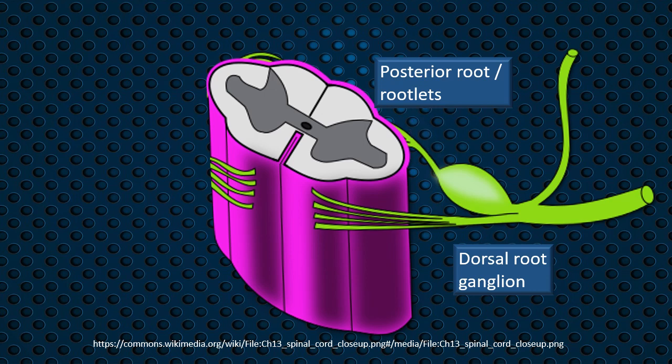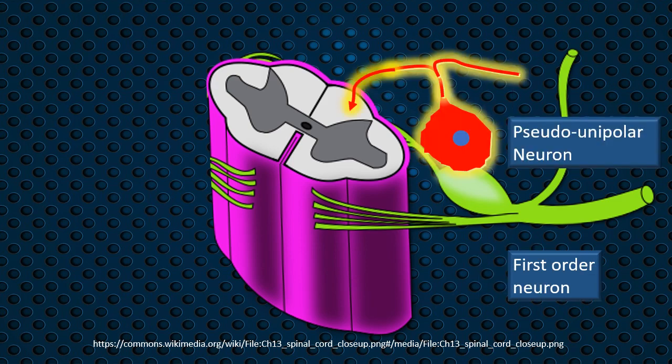Before starting the discussion on related information: the posterior rootlets and the posterior root bring in sensory information from the dorsal nerve ganglion cells, which are pseudo-unipolar cells. In this discussion, these are taken as the first-order neurons. The peripheral processes go to various parts of the body and end in nerve end organs. From there, the input is brought in, and through the central processes, the information is sent into the posterior column.